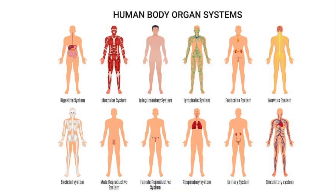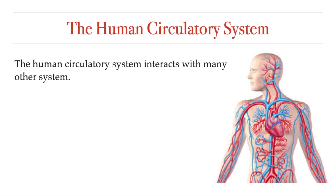In the introductory lesson to this unit, I talked about 10 different systems in the human body. Although all of these have unique functions to play in keeping us alive, they do not always do so independent of each other. The circulatory system is one system whose function is particularly tied to all other systems in the body.